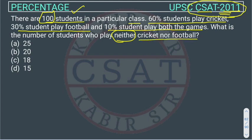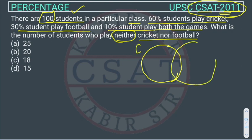We will solve it through the Venn diagram method — that is the easiest method. So suppose this circle represents the students who are playing cricket, and this circle represents the students who are playing football.